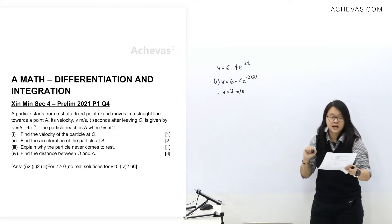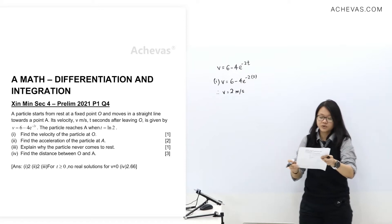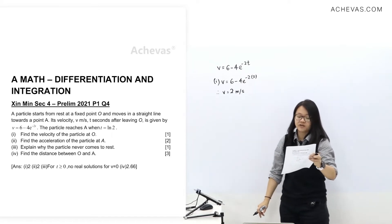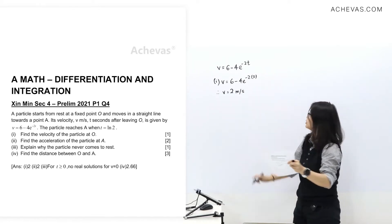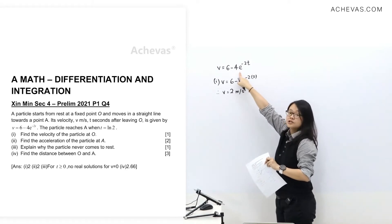Part 1, question part 2, find the acceleration of the particle at A. We do not have expression for acceleration, so we need to get from here.